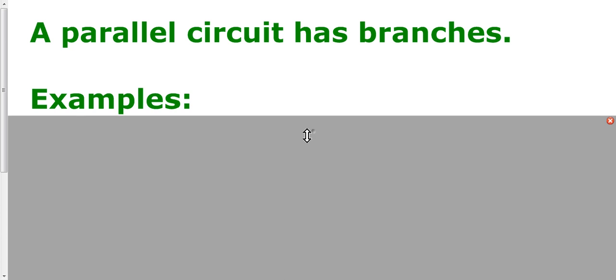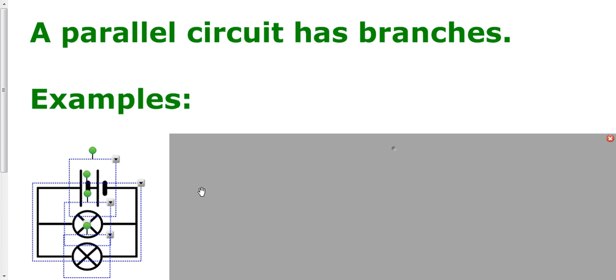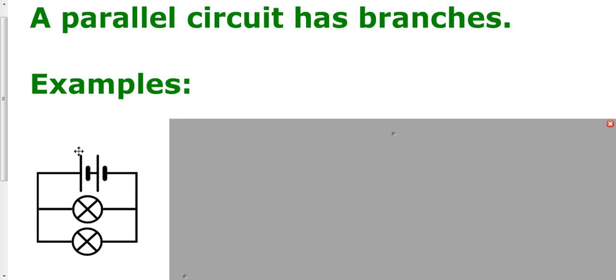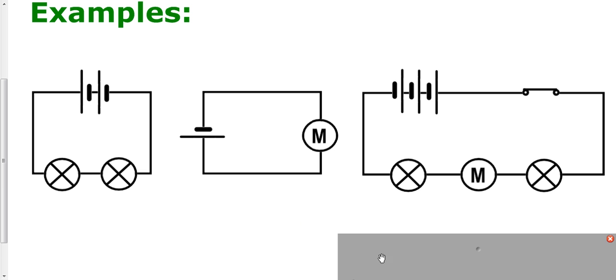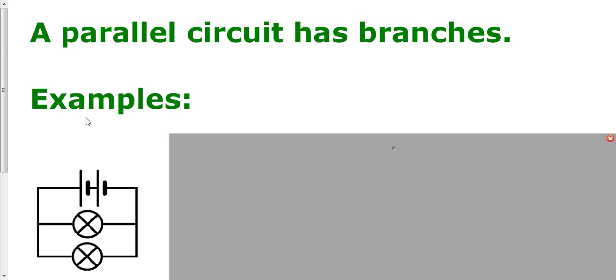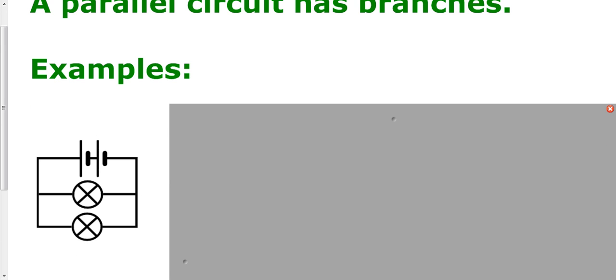So if a series circuit has no branches, a parallel circuit has branches. Here we've got a parallel circuit with two cells and two bulbs. Notice how it's different from the series circuit with two cells and two bulbs — this circuit has got branches. Let me just highlight the branch here and a branch here, where current can split up or current can join back together. This is what makes something a parallel circuit — having branches.